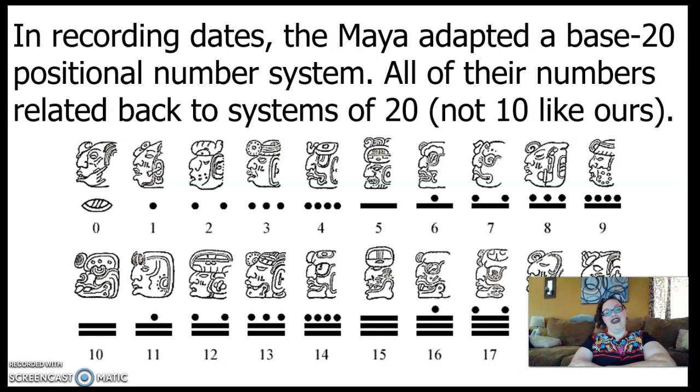In recording dates, the Maya adopted a base 20 positional number system. We talked about how their months were 20 days long. Every number really focused around 20 for the Maya. All of their numbers related back to systems of 20. Not 10 like ours. Our systems, aside from measuring, relate back to a system of 10. Again, theirs had a base 20.